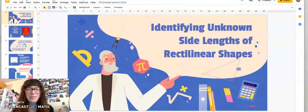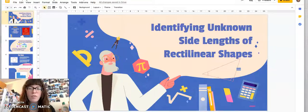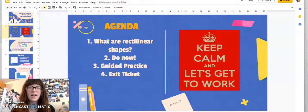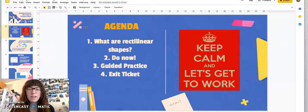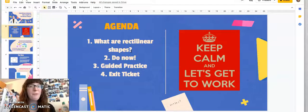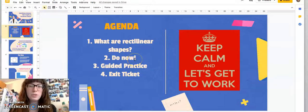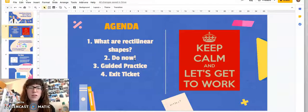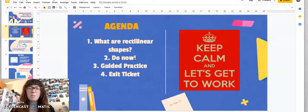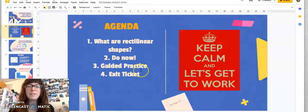Hi friends! Welcome back for another math lesson. Today we're going to be identifying unknown side lengths of rectilinear shapes. On our agenda today we're going to talk about what are rectilinear shapes. You already know, you just didn't know that word. We'll do a do now to help us remember some rules that we're going to need to use during this lesson. We'll do some guided practice problems and then it will be time for your exit ticket. So let's get to it.